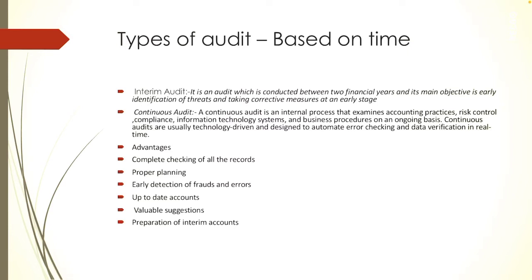The auditor will have good time to plan his work and can evenly spread and distribute his work throughout the year, which will improve the efficiency of the auditor. Next comes early detection of frauds and errors — the work of the auditor is to detect frauds and errors in the books of accounts. Continuous audit makes this easier, and it creates a moral check in the minds of workers, as frauds and errors will be detected at an early stage.